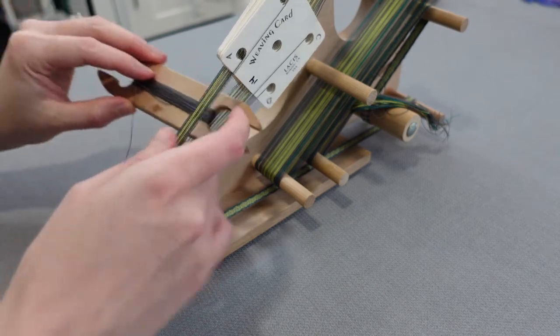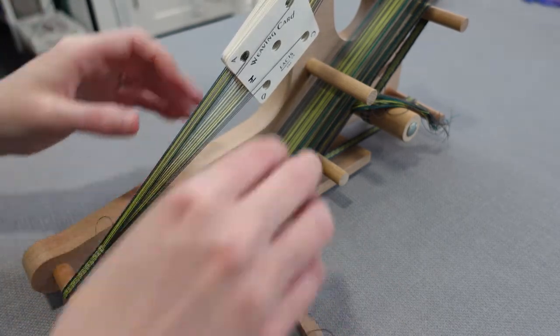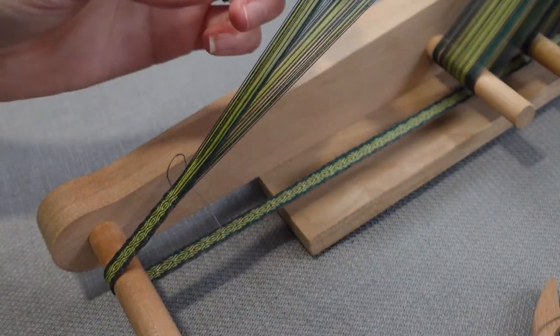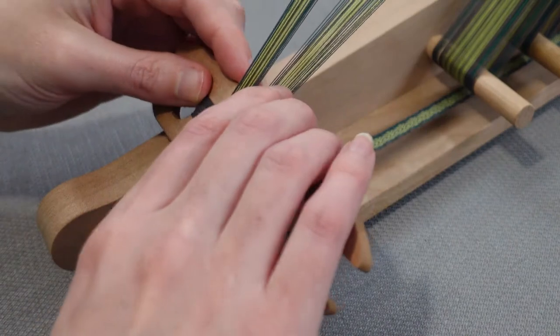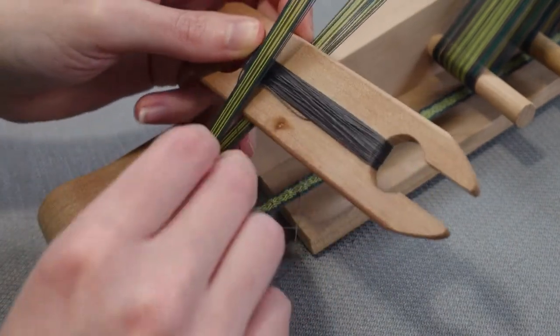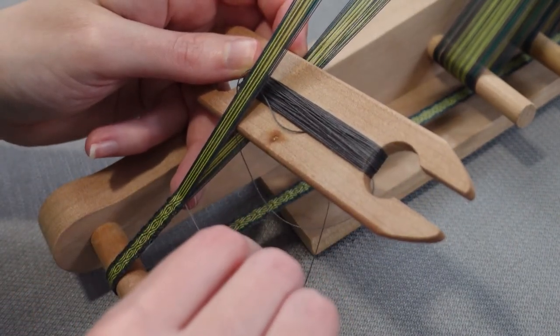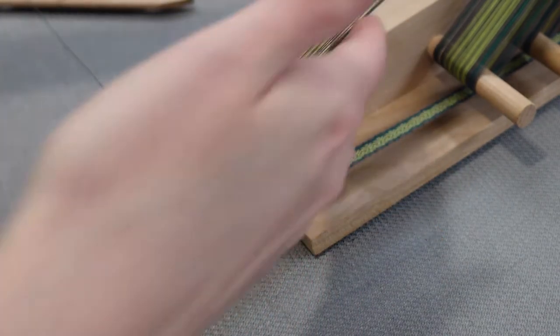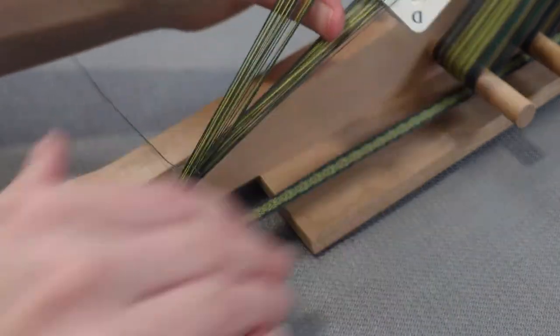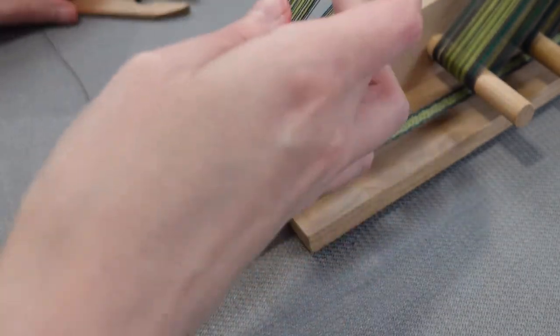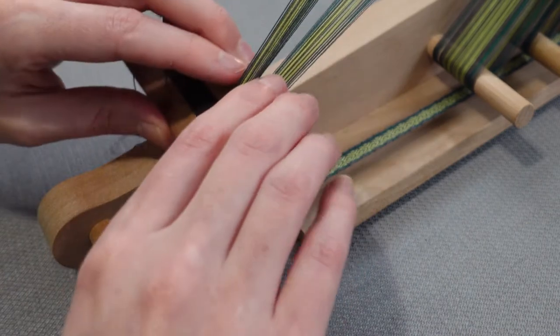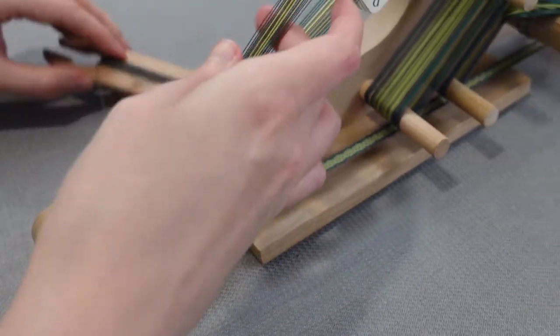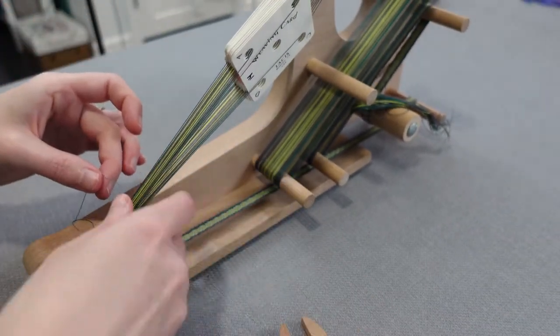To weave, pass the shuttle through the shed leaving a loop. Turn the cards, then beat the weft thread and pull the loop tight. Pass the shuttle through the current shed leaving a loop. Turn the cards again and beat the weft thread while pulling the loop tight. Repeat this process, turning the cards forwards and backwards according to your pattern.